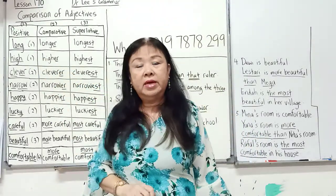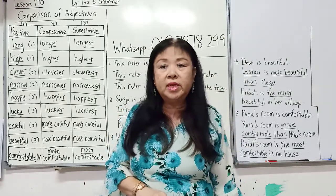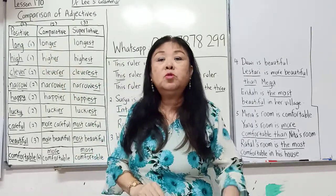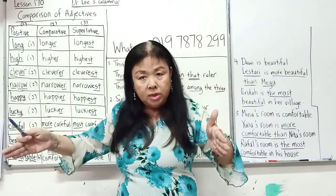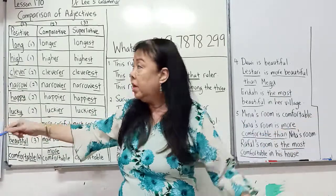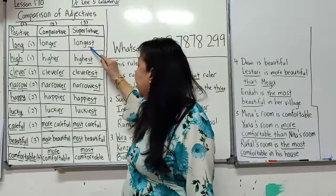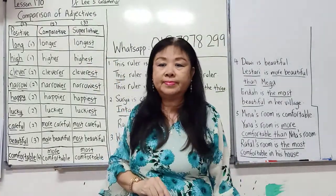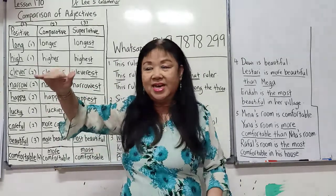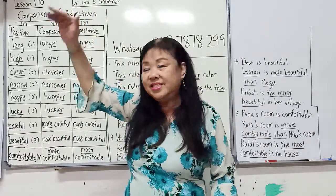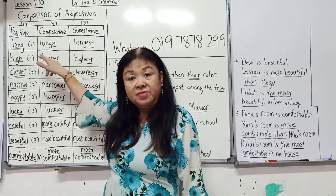For example: long, high — one syllable each. Usually when you have only one syllable, you put ER and EST. So long becomes longer than and the longest. When you put ER, behind you must put than — T-H-A-N. But if you put EST, you must put the in front: the longest. High becomes higher than, and the highest.